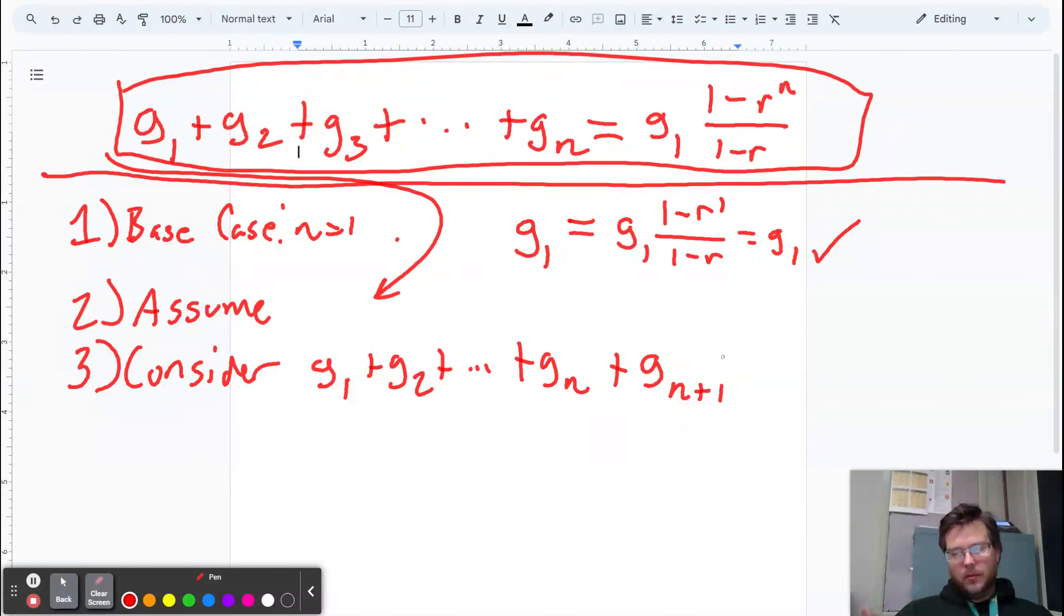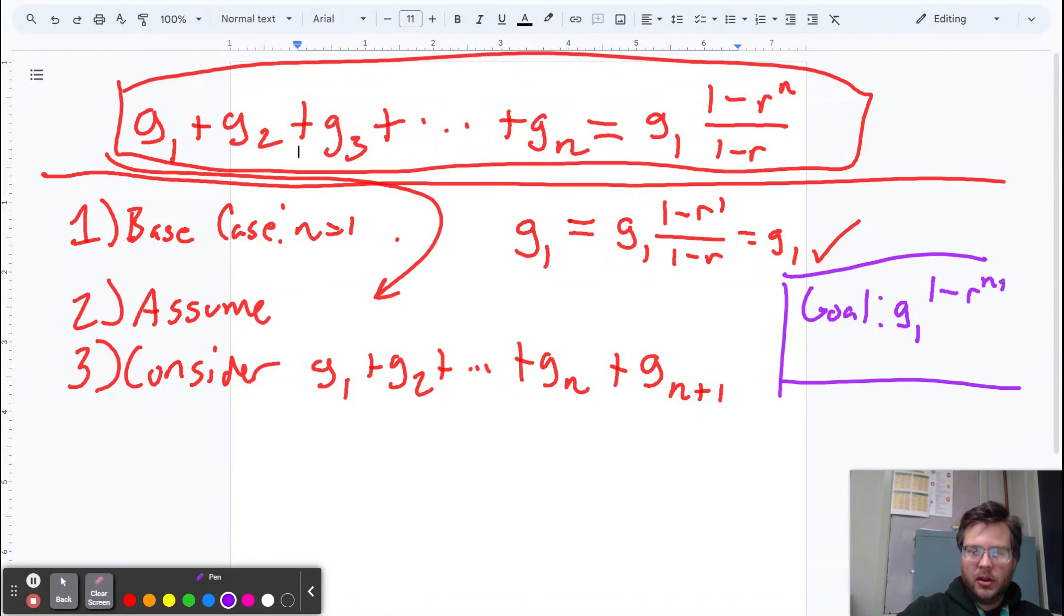And we have a goal. You can't write your goal as part of the proof, but it's okay to write it over on the side just to remind yourself. Your goal is that all of that ends up being g1 times 1 minus r to the n plus 1 over 1 minus r. Because your goal is to prove that the n plus 1 version of the left-hand side implies the n plus 1 version of the right-hand side.